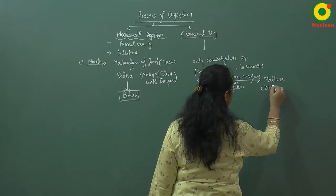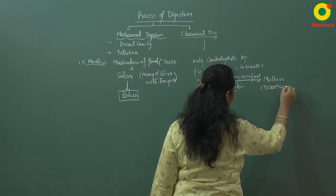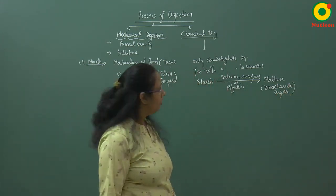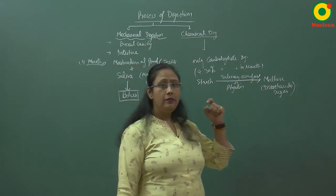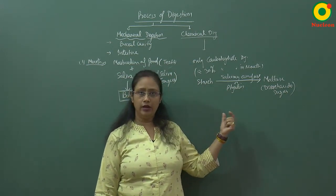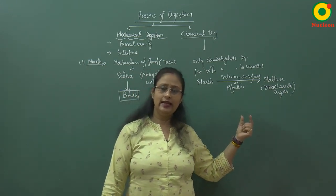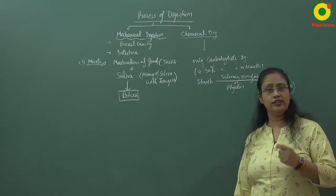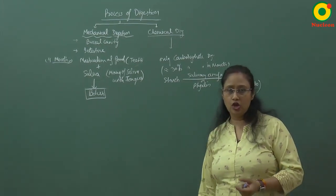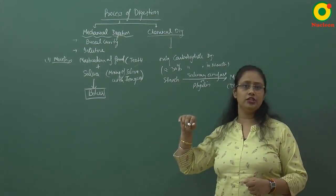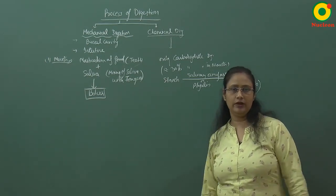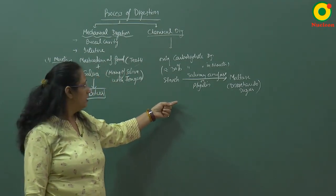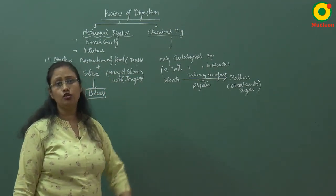Maltose is a disaccharide. It is a sugar which is in disaccharide form — the disaccharide form is the absorbable form — so this further digestion will happen in other parts. Ptyalin is basically used to digest cooked starch.